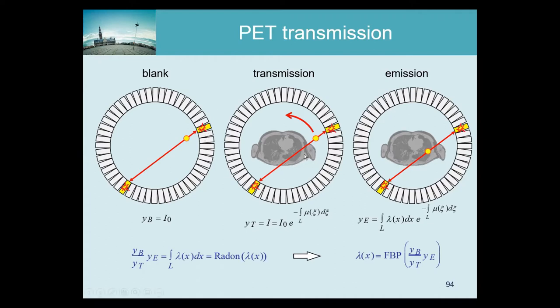Then a patient comes in. Originally the patient was not injected yet, but put on the table, and then the transmission scan was done. The patient is asked not to move anymore, because once we measure the attenuation map, the patient shouldn't move — that would change the attenuation map.